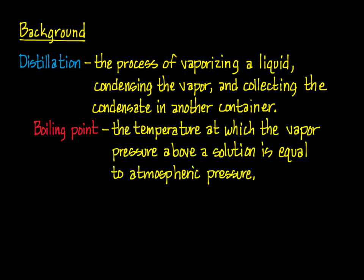During the distillation, you will be able to measure the boiling point of your unknown. The boiling point of a compound is the temperature at which the vapor pressure above a liquid is equal to atmospheric pressure. When the boiling point is reached, we see bubbles form throughout the liquid because the vapor form of the compound can exert enough force to overcome the pressure of the atmosphere pushing down on the liquid. This definition is dependent on atmospheric pressure, so in an open container, the boiling point of a liquid will be lower in Denver, Colorado than it is here in Providence, Rhode Island because of the lower atmospheric pressure.